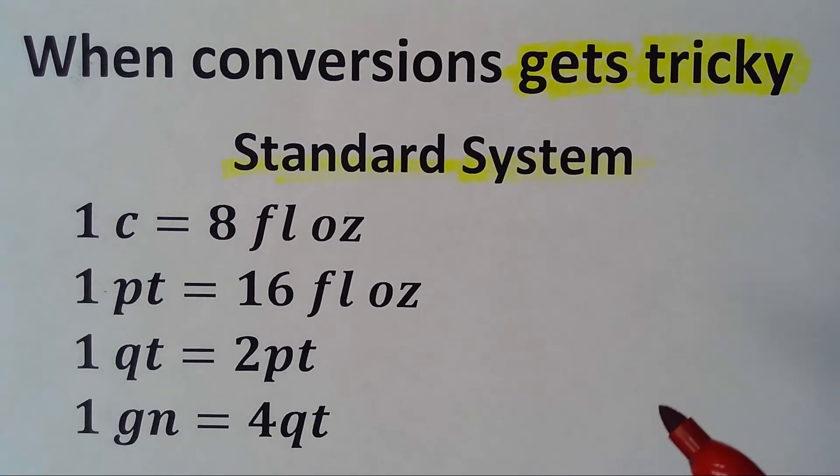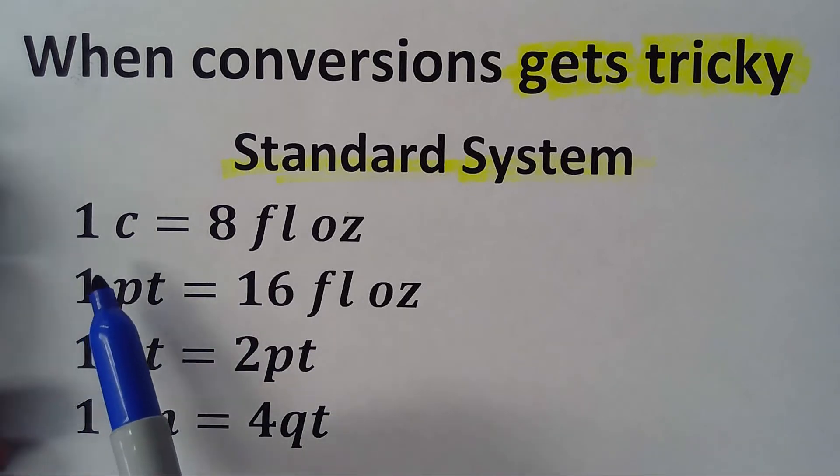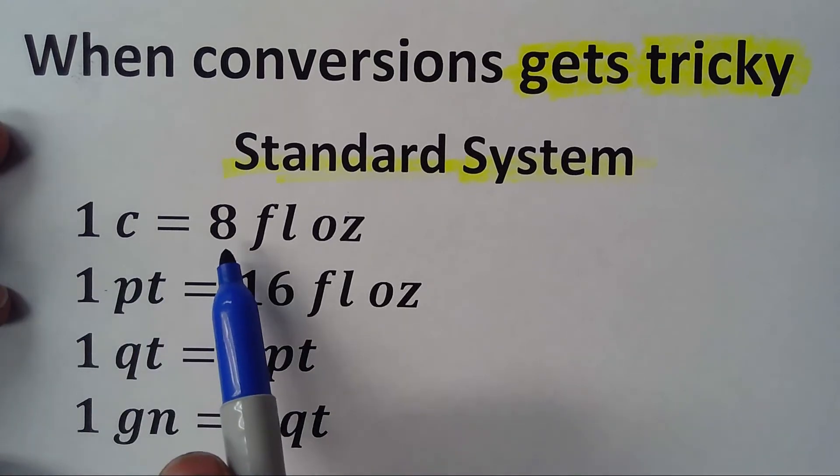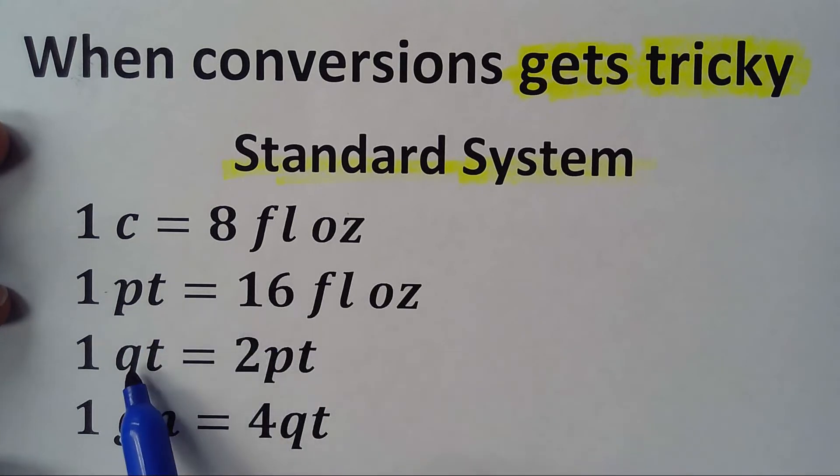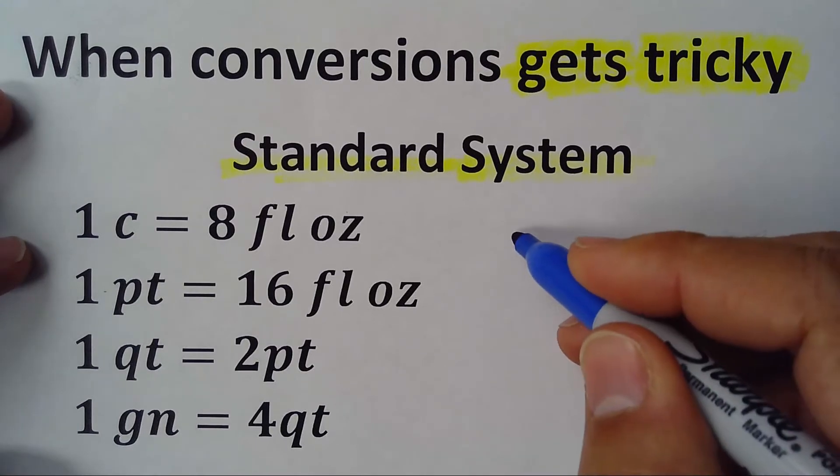It gets confusing because not all the conversions are the same. A cup has eight fluid ounces, a pint has 16, a quart has two pints, a gallon has four - it's kind of confusing. So when you want to convert...